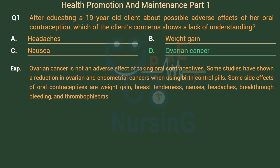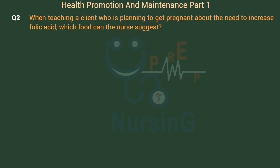Some side effects of oral contraceptives are weight gain, breast tenderness, nausea, headaches, breakthrough bleeding, and thrombophlebitis.